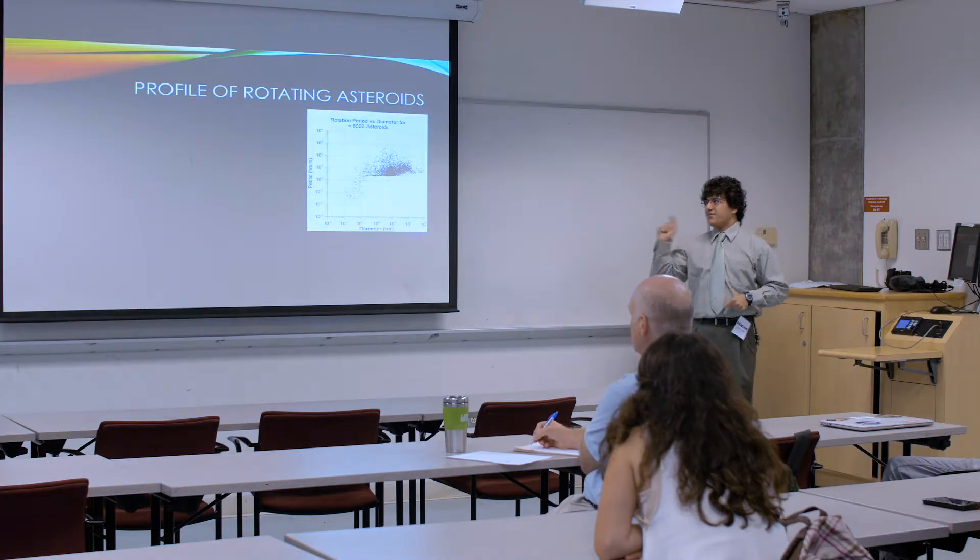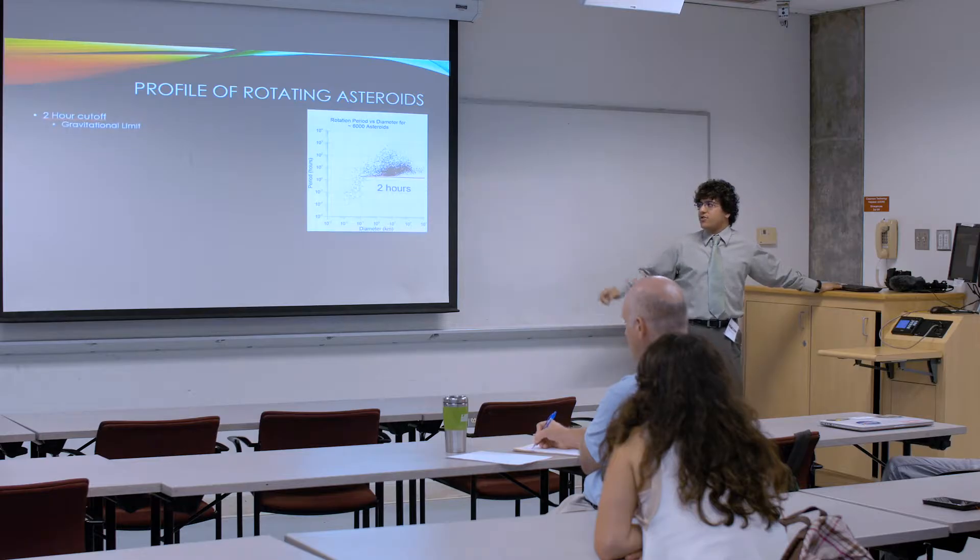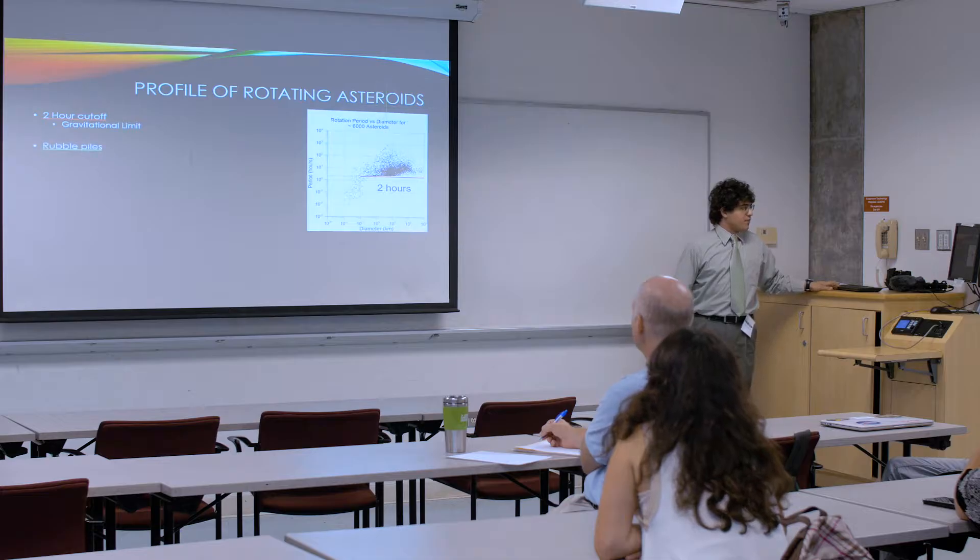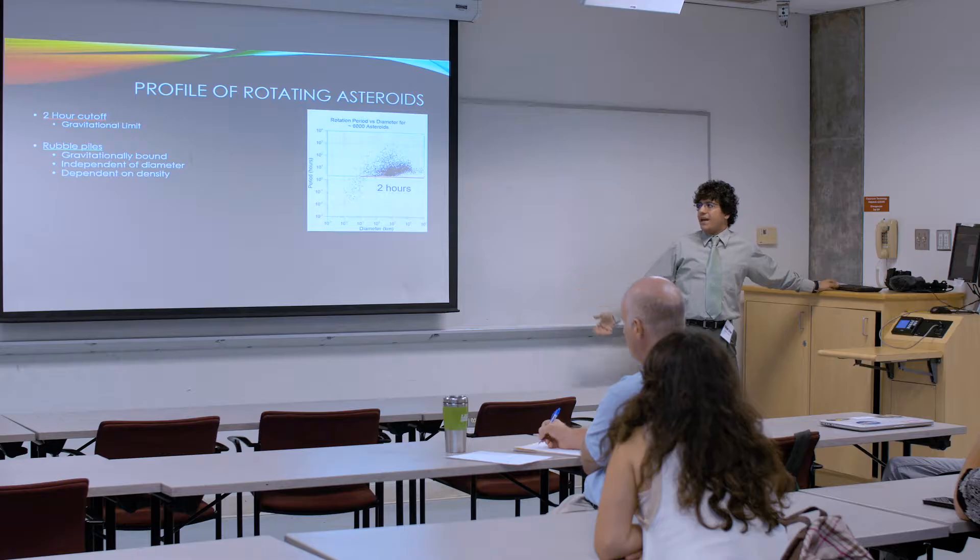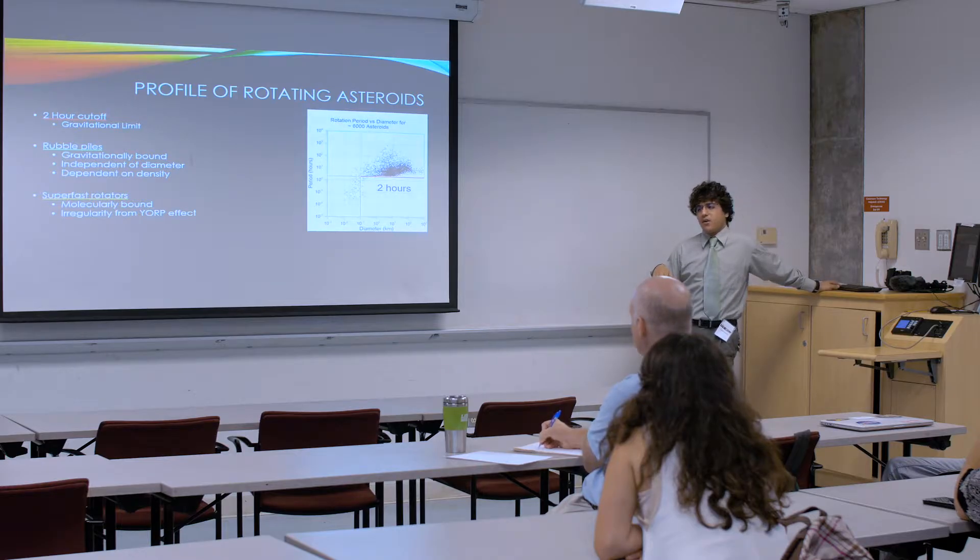What I'm interested in is rotating asteroids. What you see here is a plot showing diameter of asteroid versus rotation period in hours. You'll notice there's this really sharp cutoff around two hours, and that's the gravitational limit. Basically, anything that spins too fast is just going to tear itself apart. These up here tend to be large rubble piles that are gravitationally bound and have a period that's independent of diameter and dependent on density. These ones down here are super fast rotators. They're molecularly bound and have an irregularity in their period due to something called the YORP effect.